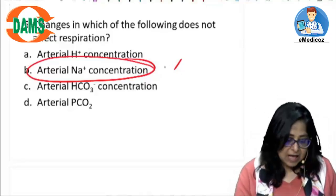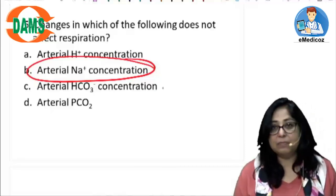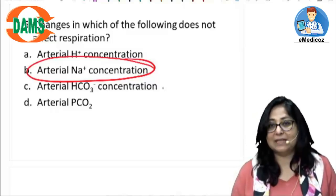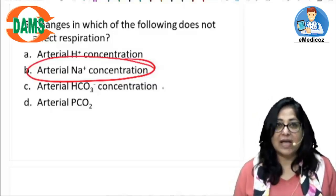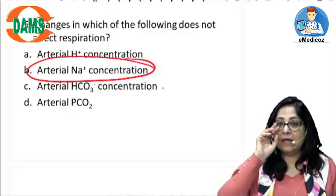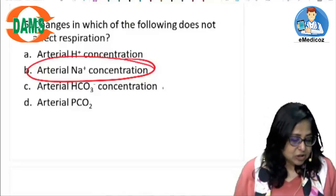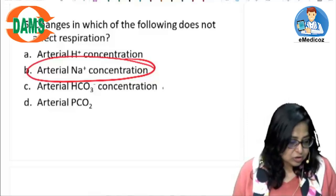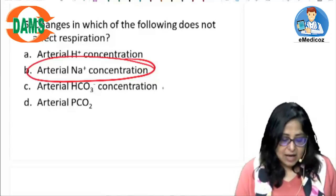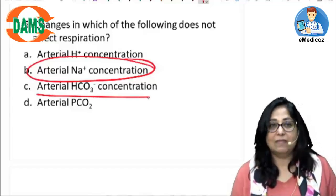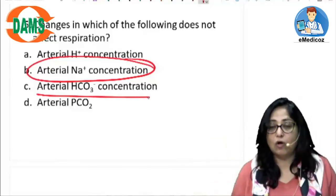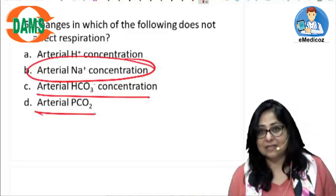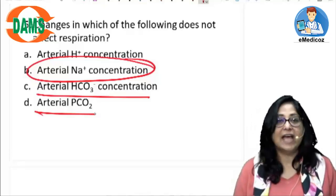Arterial H+ concentration — an increase in arterial H+ means acidosis, a decrease in pH. Acidosis will affect the peripheral chemoreceptors, so changes in pH affect the peripheral chemoreceptors. An increase in arterial bicarbonate means alkalosis, which would cause suppression of the respiratory drive. Arterial pCO2 will affect both the peripheral as well as the central chemoreceptors.